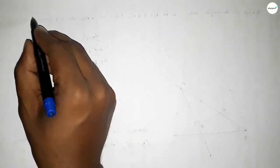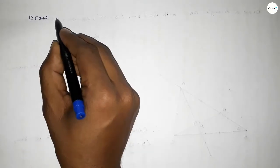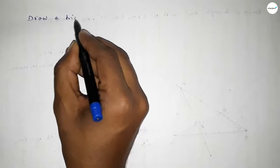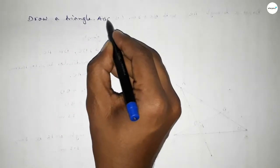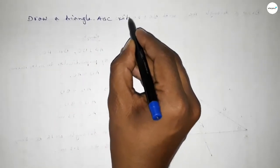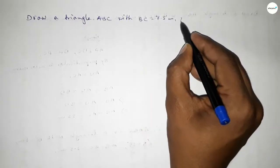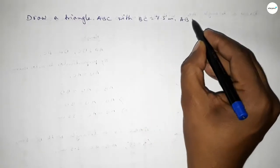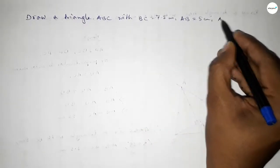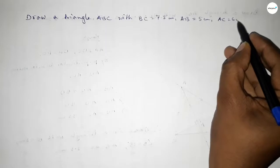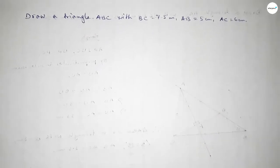Hi everyone, welcome to SSR Classes. Today in this video we have to draw a triangle ABC with BC equal to 7.5 centimeters, AB equal to 5 centimeters, and AC equal to 6 centimeters. So let's start the video.